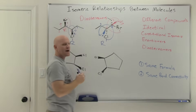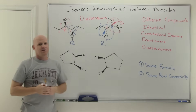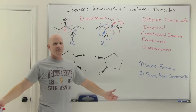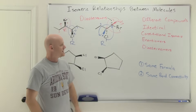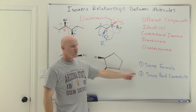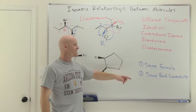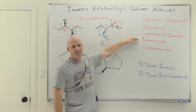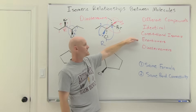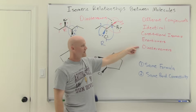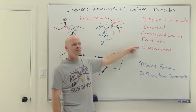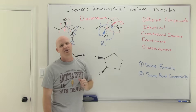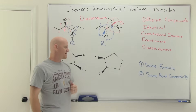When you've got multiple chiral centers: all chiral centers must be in the same configuration for the molecules to be identical; all must be in the opposite configurations to be enantiomers. But if some are the same and some are opposite, that's when you have diastereomers.